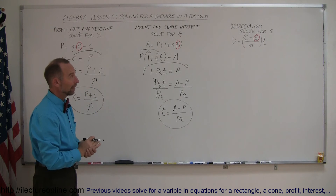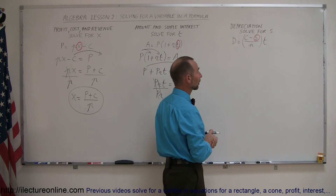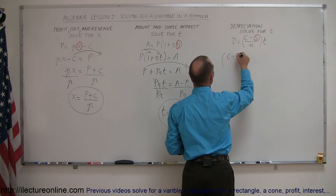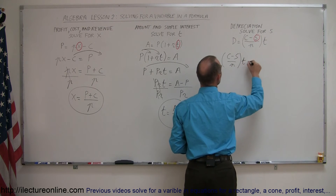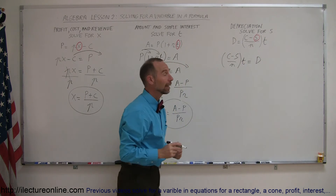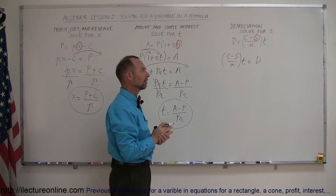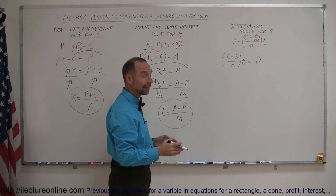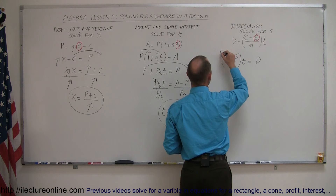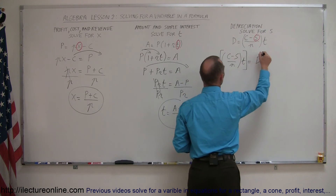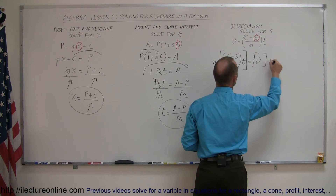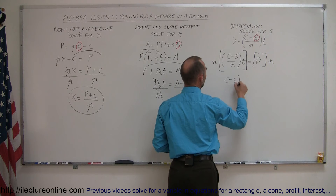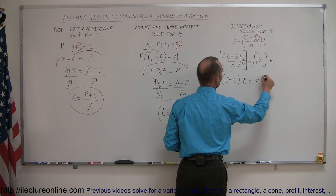Third equation — we're looking for s, that's the scrap value. It's on the right side of the equation. Let's move the equation around, so this becomes the quantity c minus s over n, times t, equals the depreciated value. We have parentheses there, and on top of that we have an n in the denominator. So we can multiply both sides by n to get rid of the fraction. The n's will cancel out, so we end up with c minus s times t is equal to n times d.